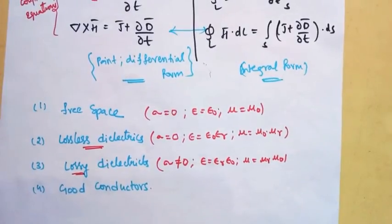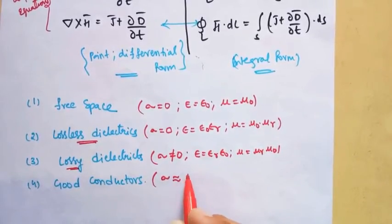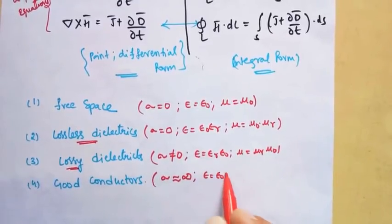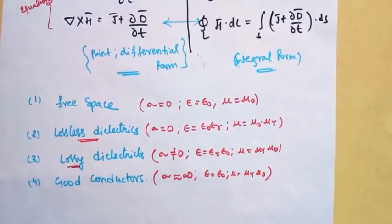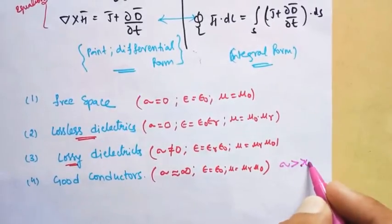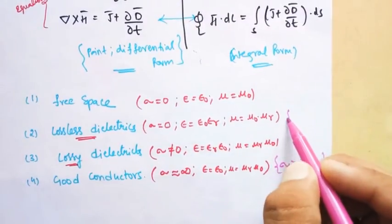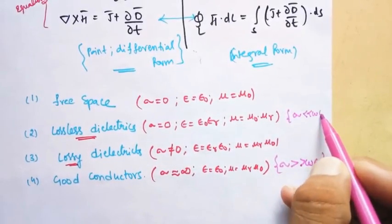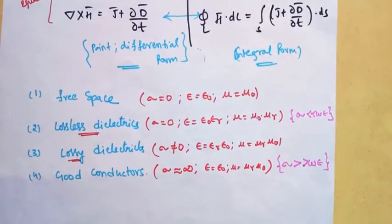The permittivity and permeability remain the same for both lossless and lossy dielectrics, but conductivity is non-zero for lossy dielectrics. For a good conductor, conductivity is approximately equal to infinity, epsilon equals epsilon-naught, and mu equals mu-r times mu-naught. Two additional conditions: for a good conductor, conductivity is much greater than omega-epsilon, and for a lossless dielectric, conductivity is much less than omega-epsilon-naught. With these four cases and conditions, you can solve all the equations.